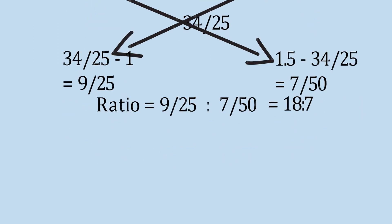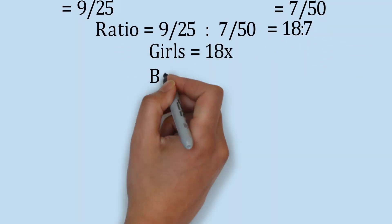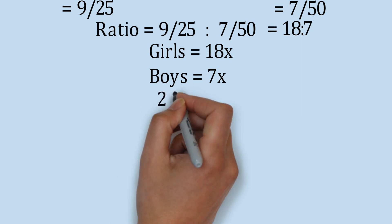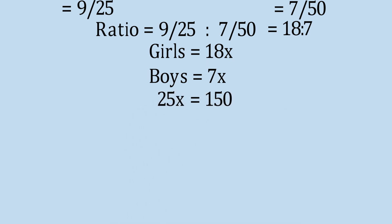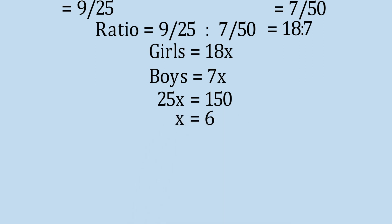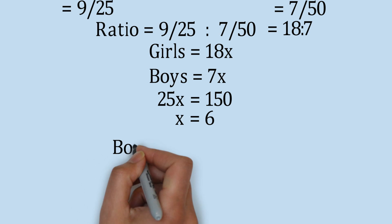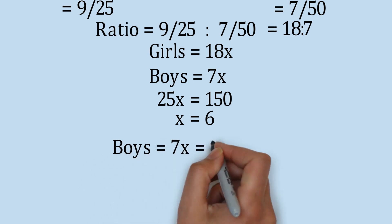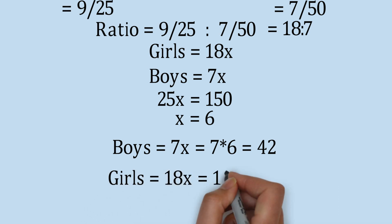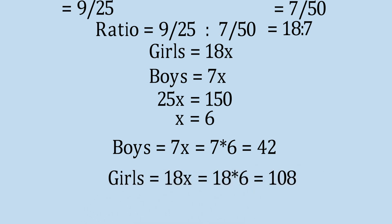We consider girls = 18x and boys = 7x. Total students = 25x = 150, so x = 6. Therefore boys = 7 × 6 = 42 and girls = 18 × 6 = 108. That is how simple it becomes using the rule of alligation.